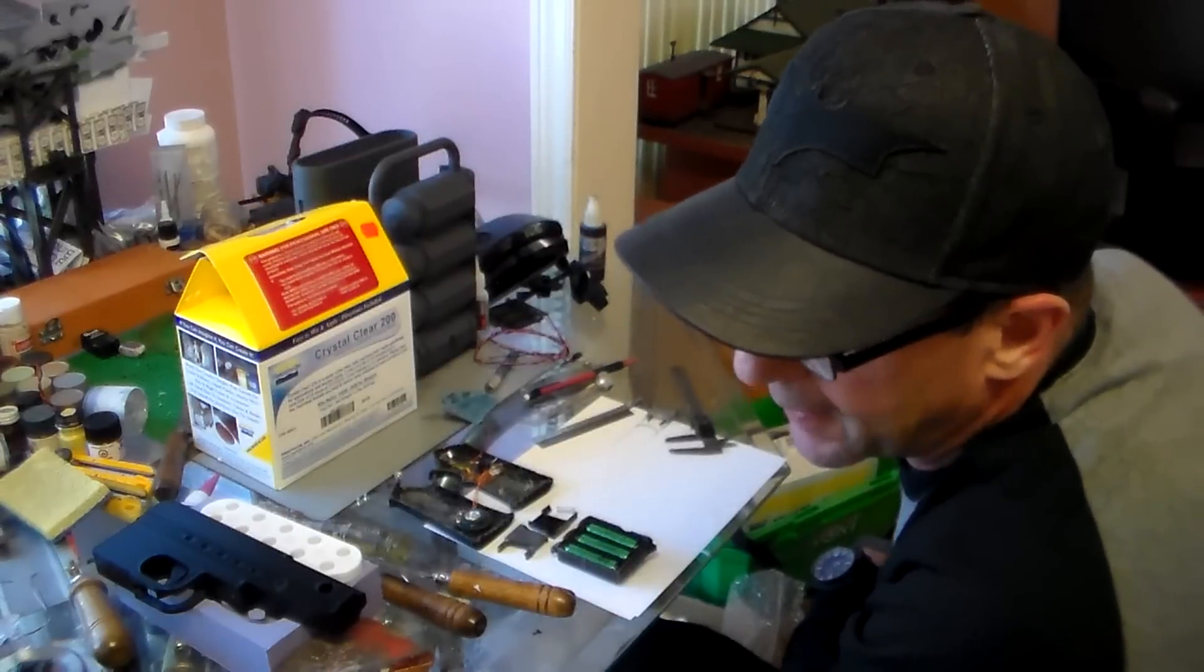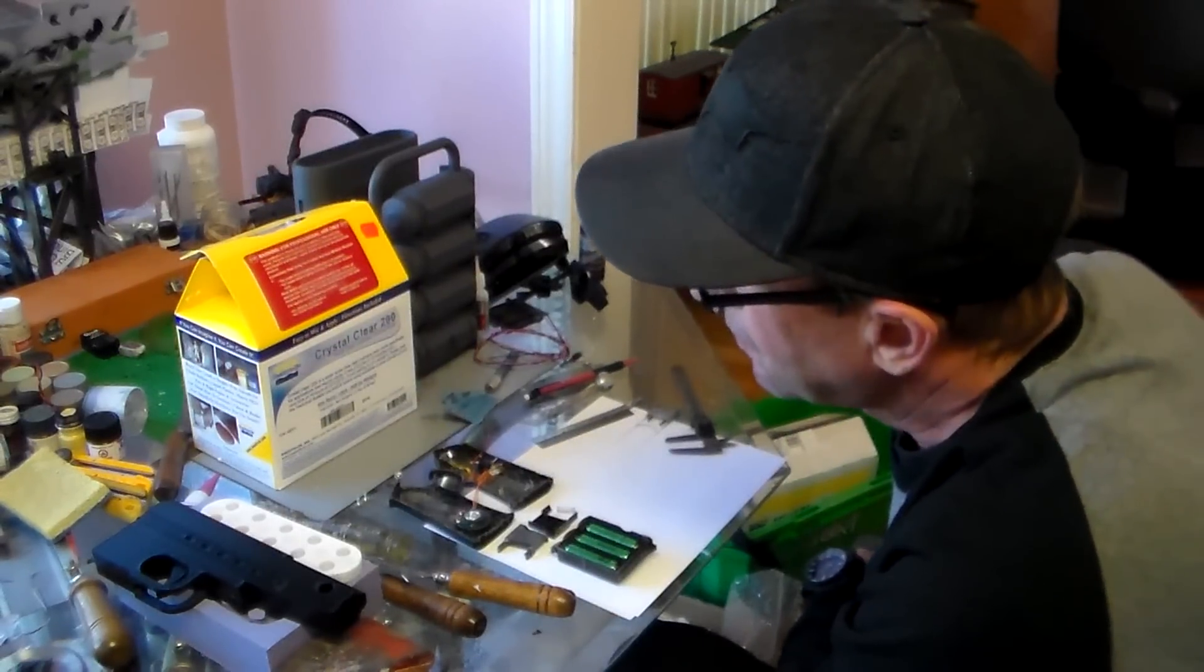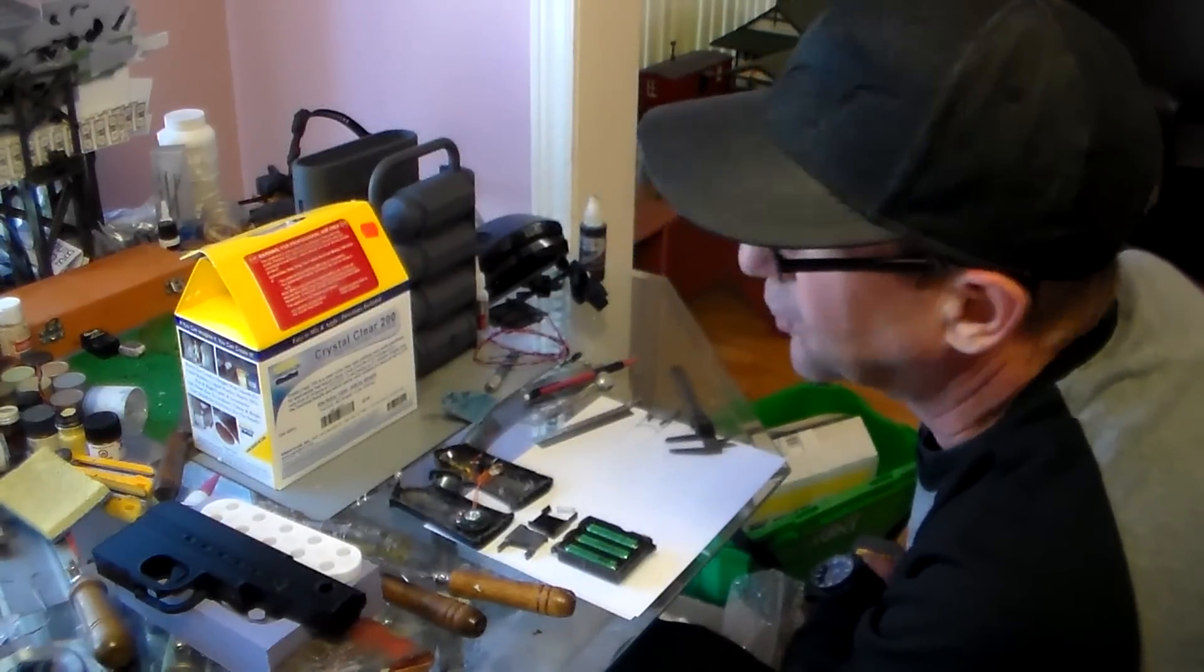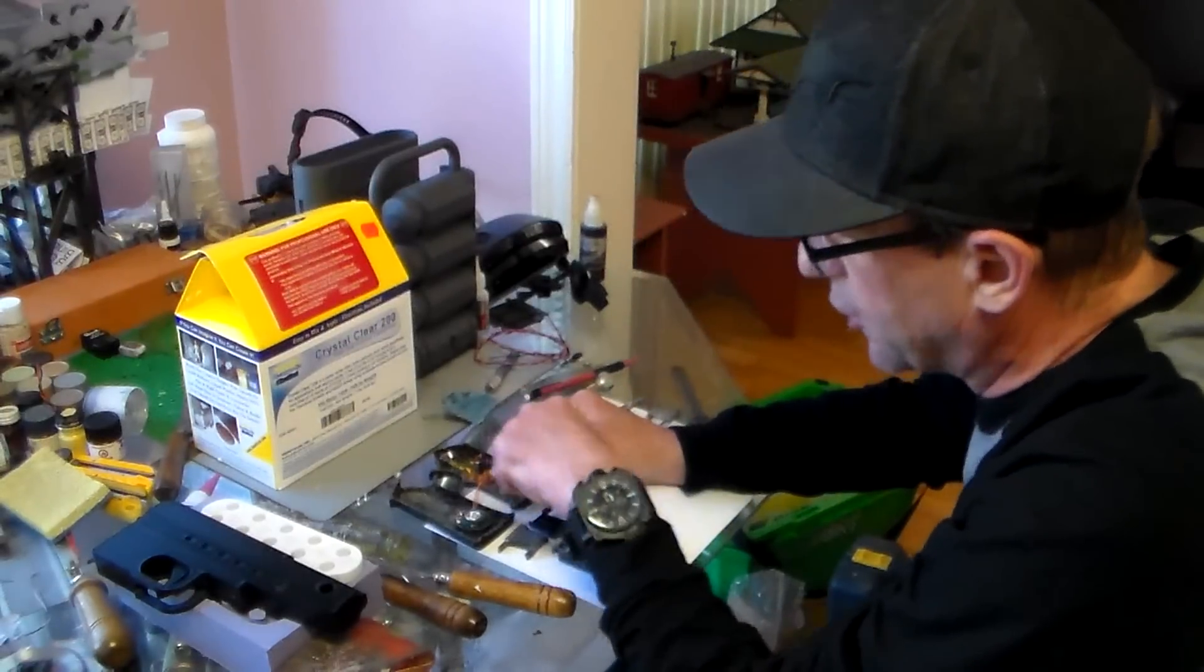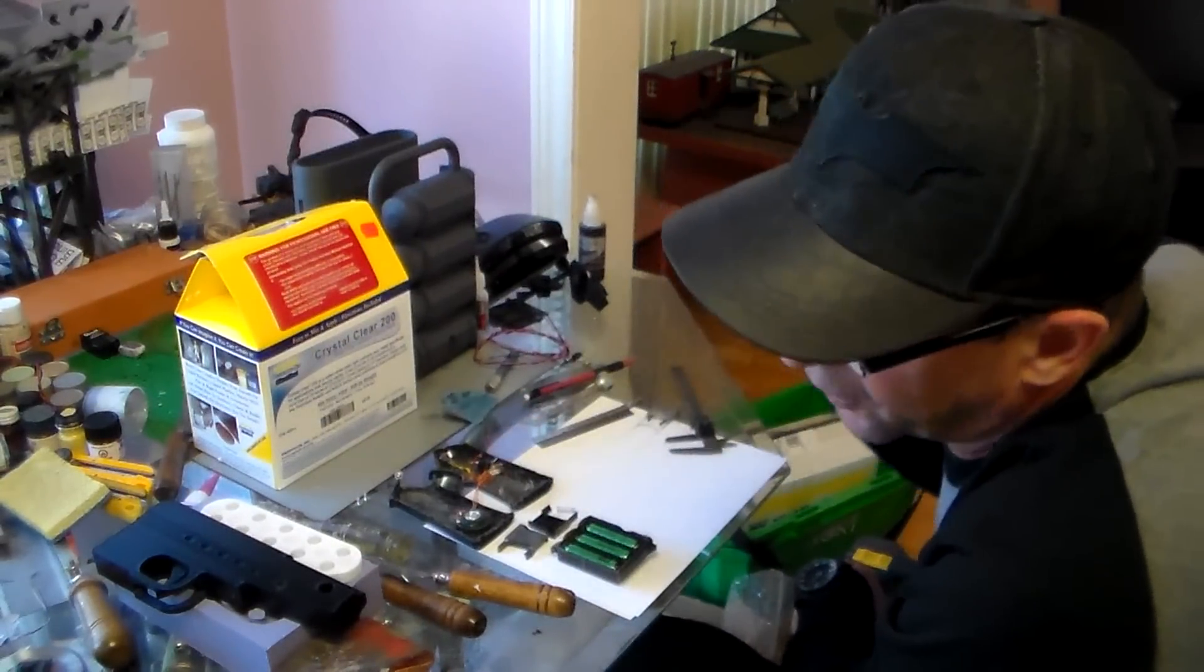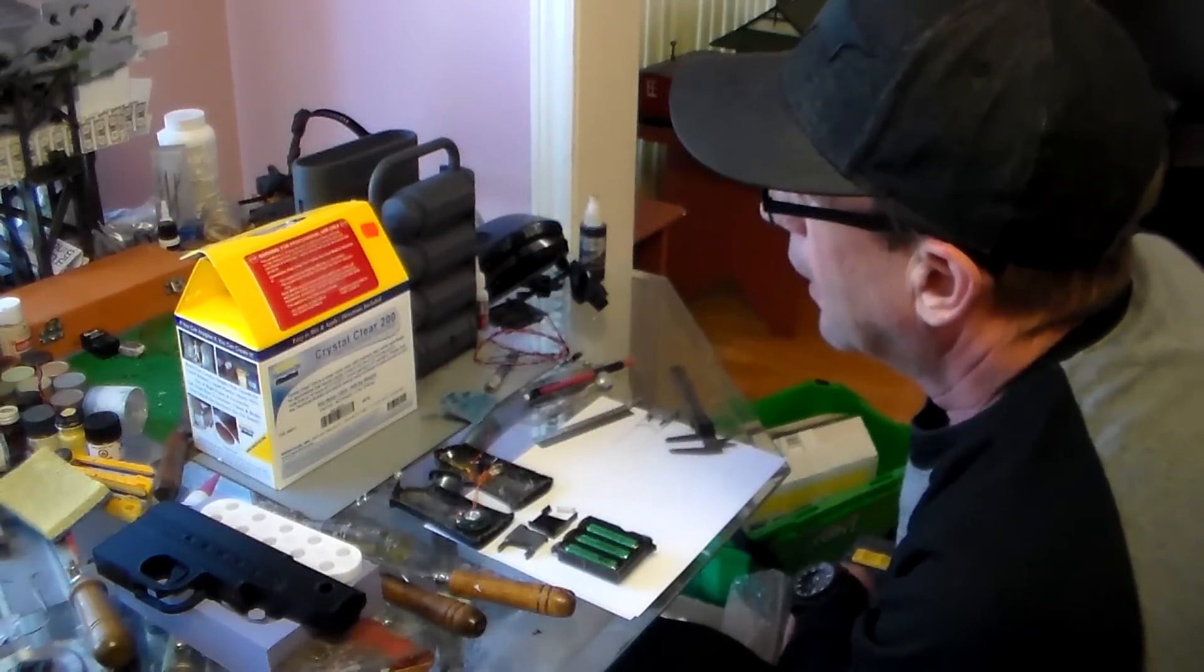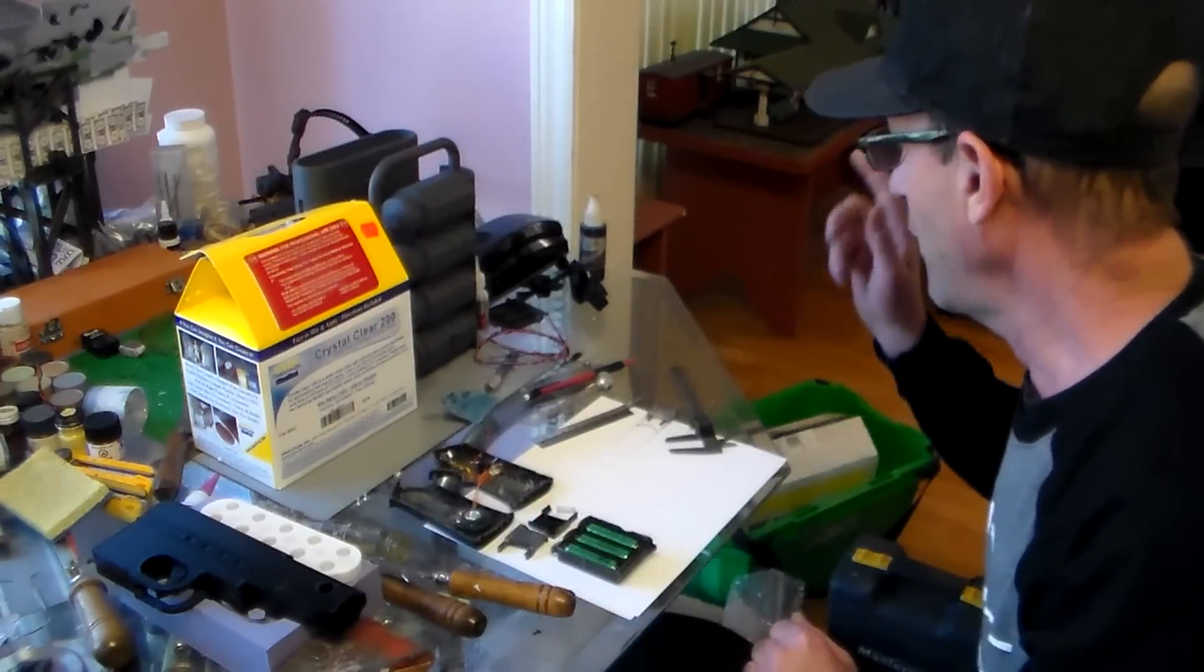When you rub your feet across the carpet and you get that little spark, that spark can be upwards of 30,000 volts. I know that sounds like a lot of voltage, but voltage isn't what kills you, it's amperage. If a little spark jumps across my finger and onto that circuit board, it would wipe out the entire circuit board. So that's another reason why I didn't want to handle it too much.